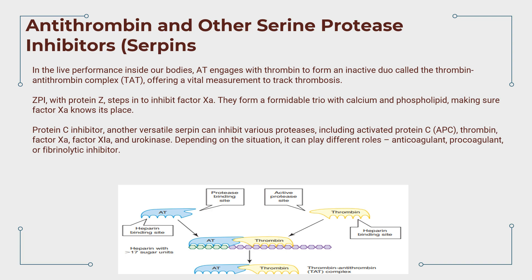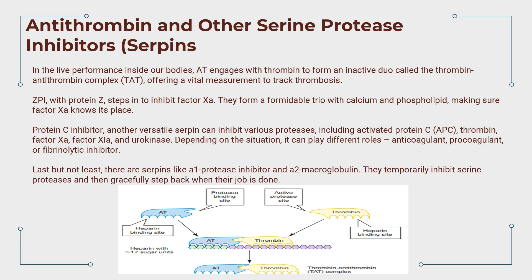Depending on the situation, protein C inhibitor can play different roles: anticoagulant, procoagulant, or fibrinolytic inhibitor. There are also serpins like alpha-1 protease inhibitor and alpha-2 macroglobulin, which have the power to temporarily inhibit serine proteases and then gracefully step back when their job is done.